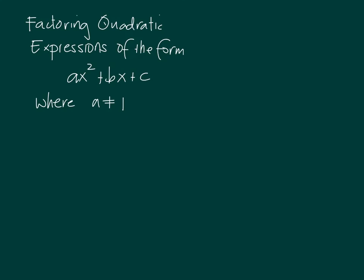In this video, I'm going to teach you how to factor quadratic expressions of the form ax squared plus bx plus c, where a is not equal to 1. For example, suppose you wish to factor the expression 6x squared minus x minus 12. As you can see, it follows ax squared plus bx plus c, and a is not 1 — it's a 6.